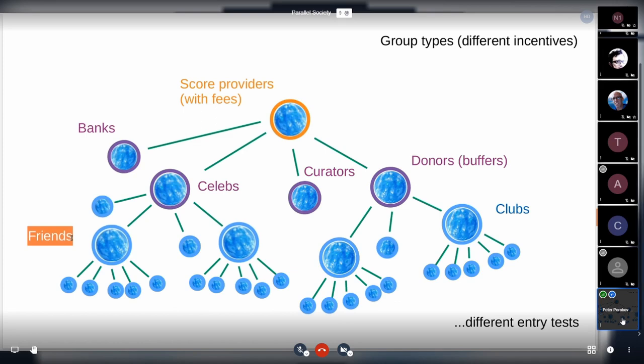The group may choose any incentive and governance model, that means we can create a lot of different group types. For example in the lowest level we can have groups of friends. Then in the central layer we may have groups like banks that gather deposits and maybe they pay users some interests.